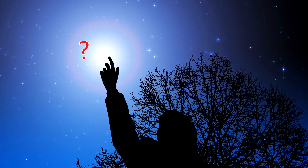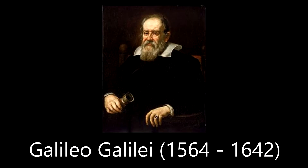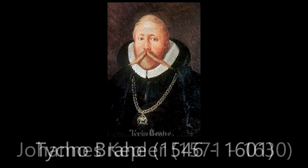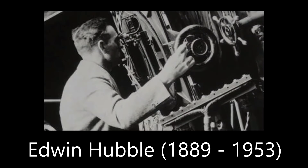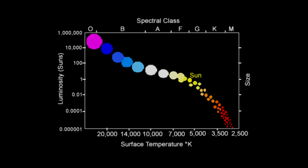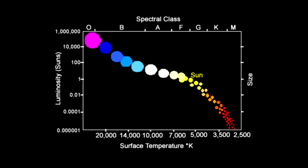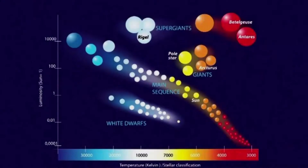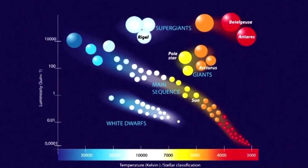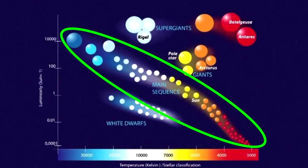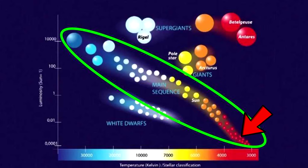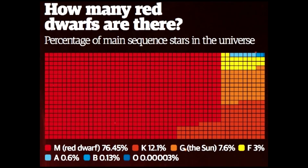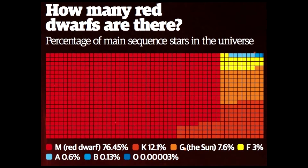Surprisingly, we have only understood what stars are for a little over 100 years, and we didn't know what a red dwarf was for about that same amount of time. At the present time we have characterized and created diagrams of different types of stars. On the main sequence diagram, red dwarfs are dim and small, but they last an incredibly long amount of time.